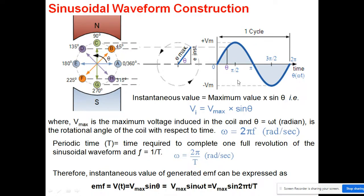You can see it is one complete cycle. Theta is measured in radians — at the start, theta is zero, and then it increases. Theta is represented as ωt, where ω is the angular frequency given by 2πf.